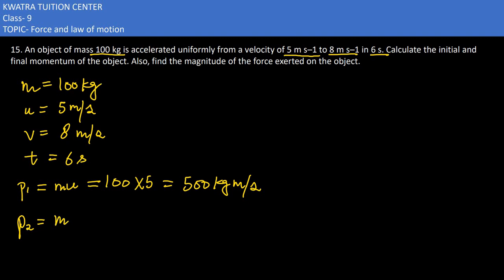Now if you want to find the final momentum, it would be m times v, so it would be 100 into 8, so it will become 800 kg meter per second. So this is the final momentum we have.